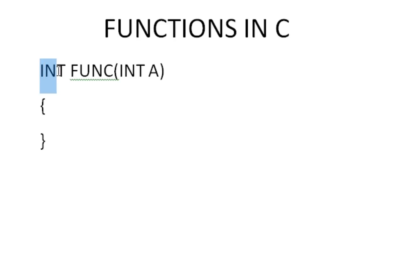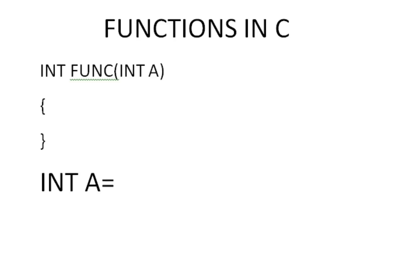If I want to call this function inside main, I need to take care of the return type. Since the return type is int, I must store the return value in an integer. So I declare: integer a = func(5), passing the integer value 5 as the argument.